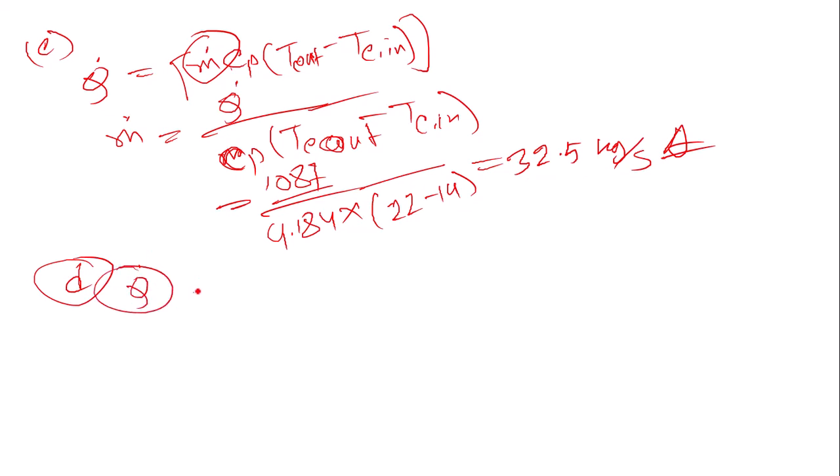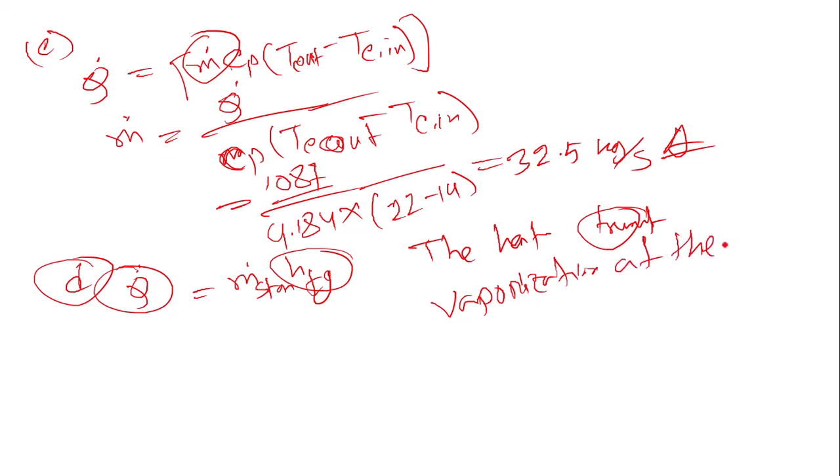For part d), the steam mass flow rate uses Q equals mass flow rate times h_fg. We need to know the heat of vaporization at 30°C for water, which is 2431 kJ/kg.